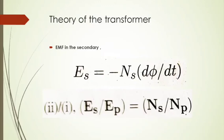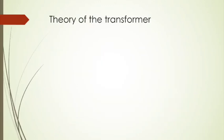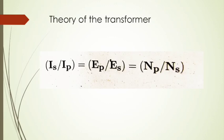Dividing the secondary equation by the primary equation, we get ES divided by EP equals NS divided by NP. For an ideal transformer, IS divided by IP equals EP divided by ES equals NP divided by NS, where IS and IP are the currents in the secondary and primary, EP and ES are the EMFs in the primary and secondary, and NP and NS represent the number of turns.